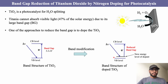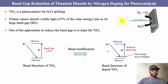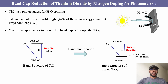When this new energy band forms, the effective gap between the valence band and the conduction band is reduced to below the visible light energy, so titanium dioxide can absorb visible light and work as a photocatalyst — for example, to produce hydrogen gas from water splitting or for environmental remediation. Thank you.